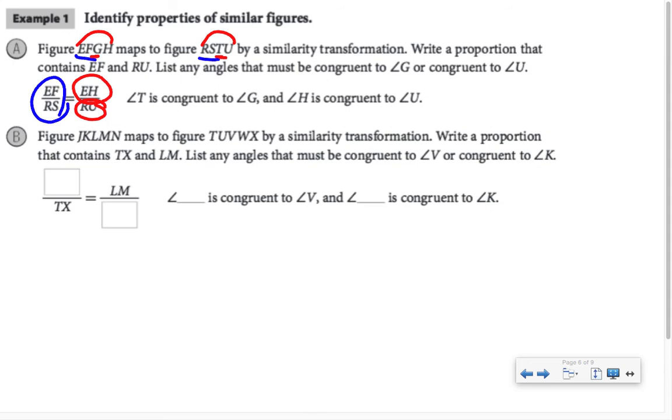We're doing kind of the same thing in Part B with a few blanks to fill in. Write a proportion containing TX and LM. TX corresponds to JN, and LM corresponds to VW. Angle what is congruent to angle V? That's the third letter, that's going to be L. Angle what is congruent to angle K? That's second letter, so that has to be angle U.